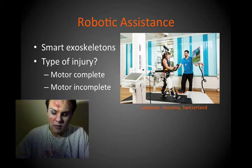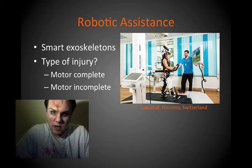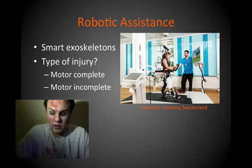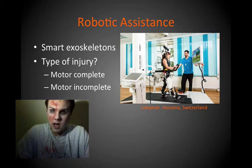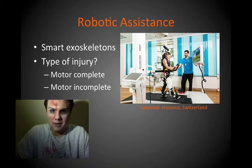Another study investigated robot-assisted gait training and found statistically significant improvement in gait parameters in people with incomplete spinal cord injuries. The robot-assisted group trained three times weekly for 40 minutes per session, while the conventional gait training group trained twice a day, five days per week for four weeks. Both groups showed increases, and neither was superior to the other, suggesting robot assistance is a viable option for specific patients who may require it.